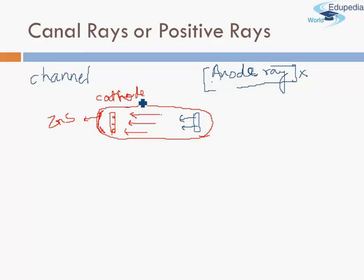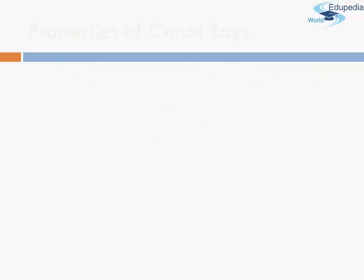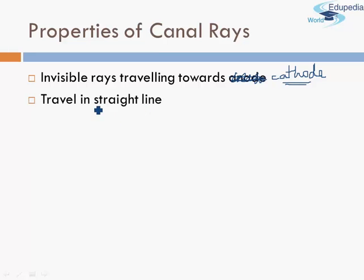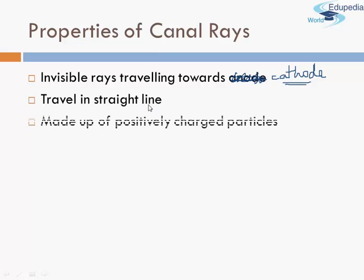Once the presence of these rays was discovered, they tried to determine their properties, just as in the case of cathode rays. First, these are invisible rays traveling towards the cathode — not the anode — so remember not to get confused. They travel in a straight line, just like cathode rays, and are made up of positively charged particles, which is opposite to the properties of cathode rays.